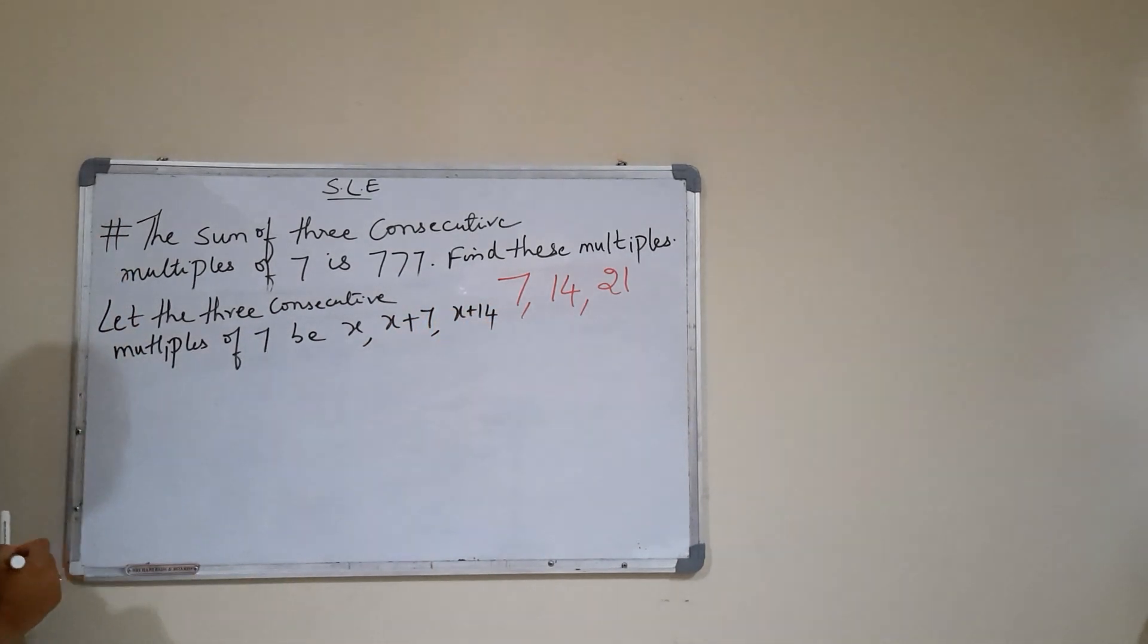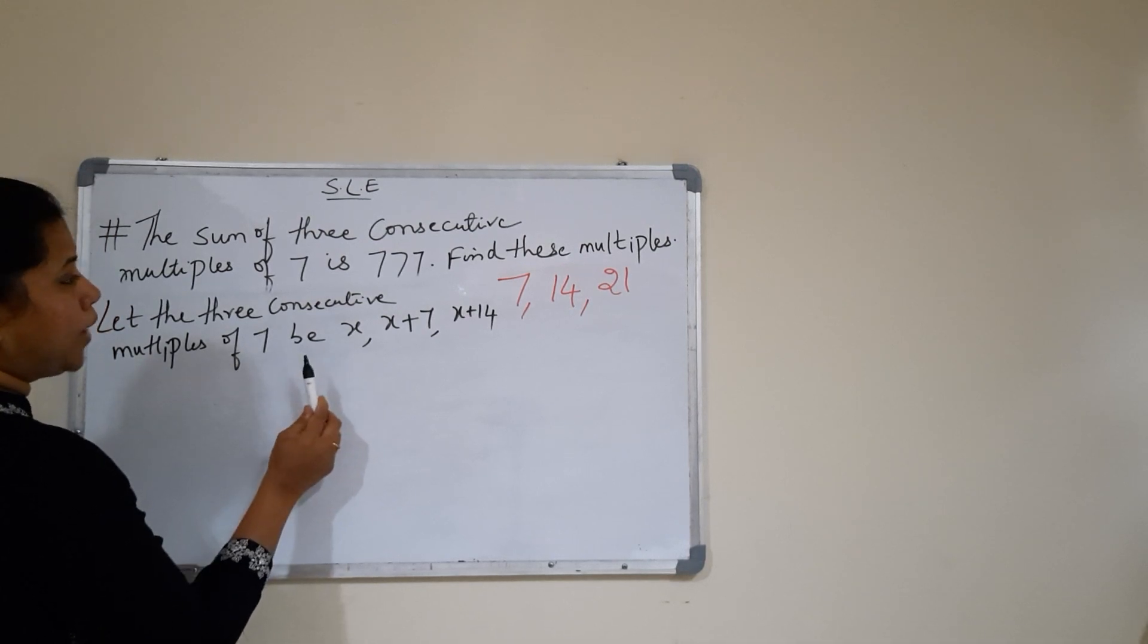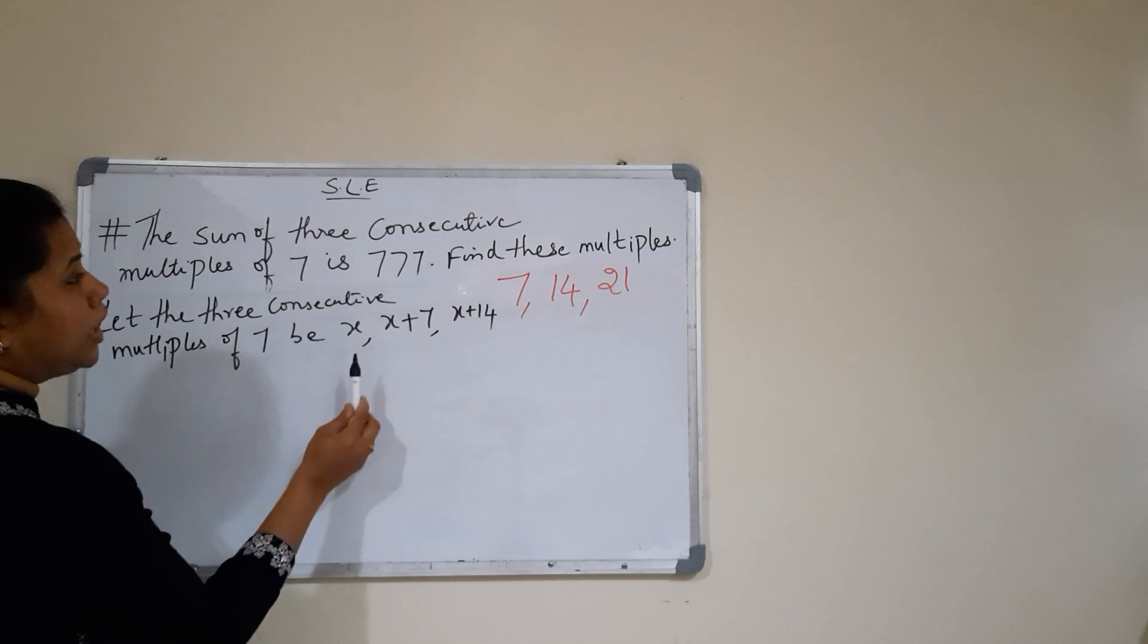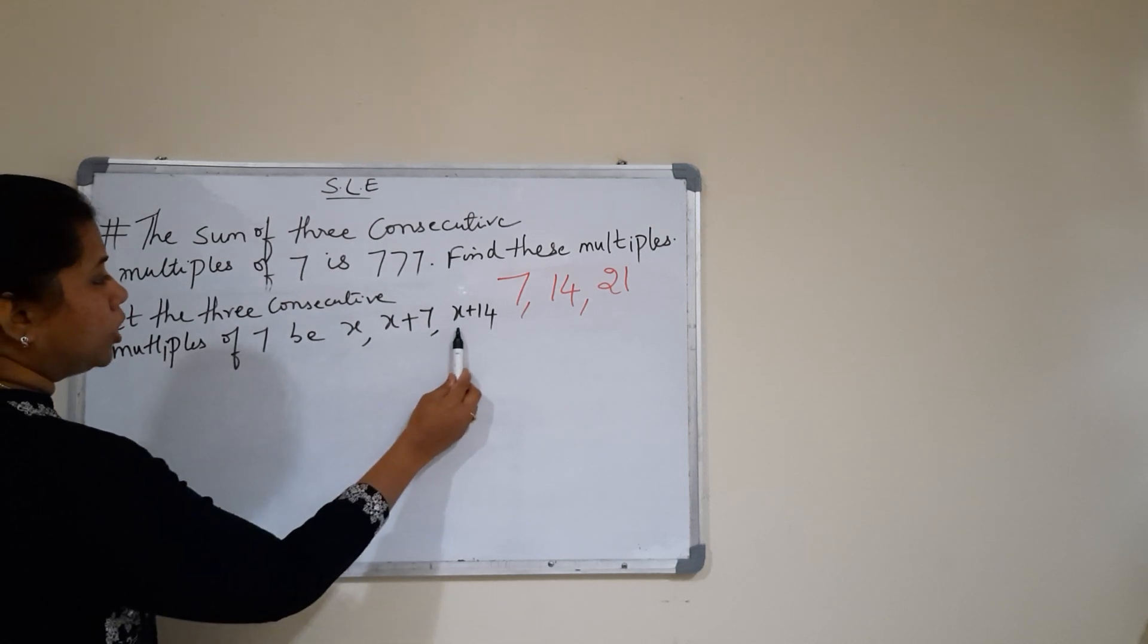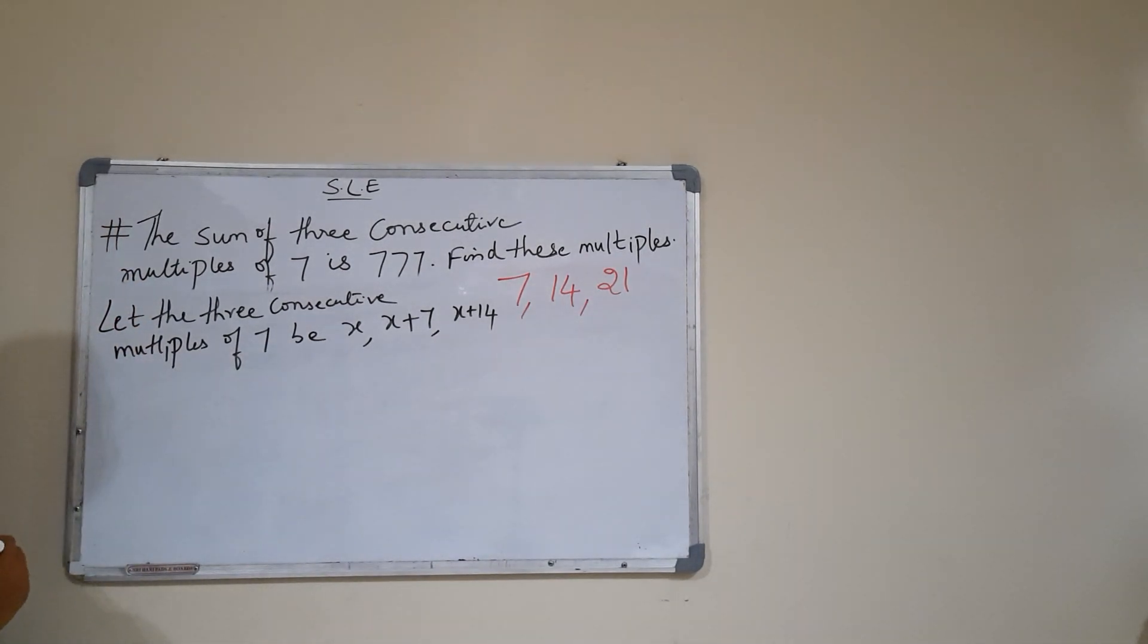You know why I have chosen these multiples as x, x plus 7, and x plus 14? Substitute the value of 7 in x, we get 7. Substitute the value of 7 in x plus 7, that is 7 plus 7, we get 14. Substitute the value of 7 in x plus 14, we get 7 plus 14, that is 21. That is the reason why I have chosen these three consecutive multiples of 7 as x, x plus 7, and x plus 14.